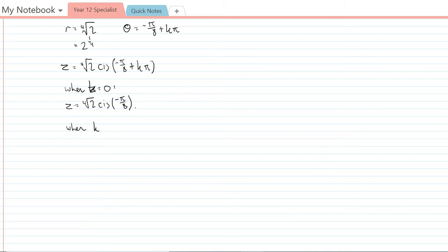When k equals 1 I get z equals the fourth root of 2 cis negative pi on 8 plus and then it's just going to be pi. So simplifying that we get the fourth root of 2 cis and then that's going to be 7 pi on 8.